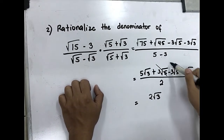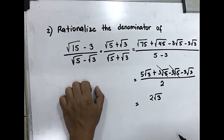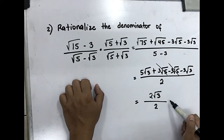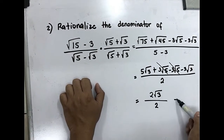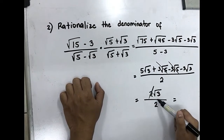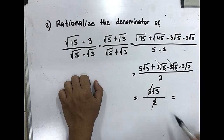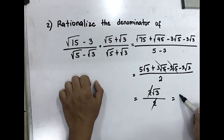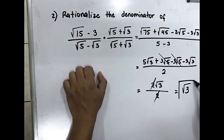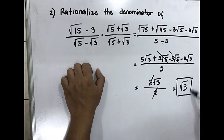3 square root of 5 minus 3 square root of 5 will give you 0, so all over 2. Simplify: divide by 2, so the answer is square root of 3. Final answer.